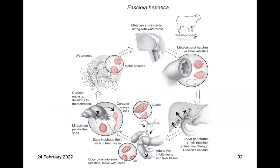The reservoir host for Fasciola hepatica is sheep. If you ingest the metacercariae — for example, from watercress — the metacercariae hatch in the small intestine. The larvae penetrate the small intestine, enter the liver through the Glisson's capsule, and migrate directly through the liver. The adults live in the bile ducts and liver tissue, and then they lay eggs. The eggs are incubated and hatch in fresh water, and the miracidium penetrates the snail. The cercariae leave the snail, develop into metacercariae on watercress, and the life cycle continues.